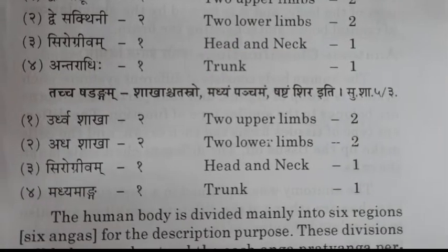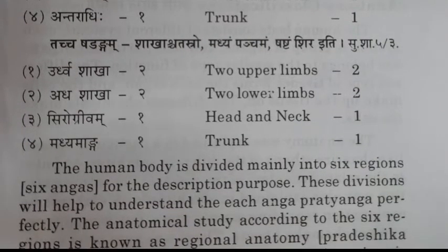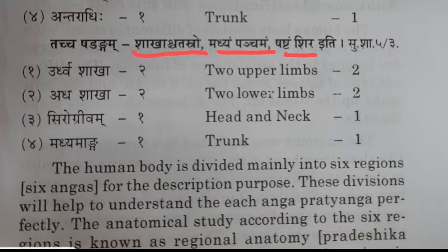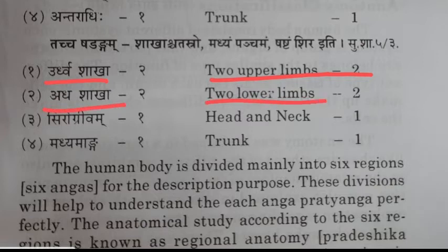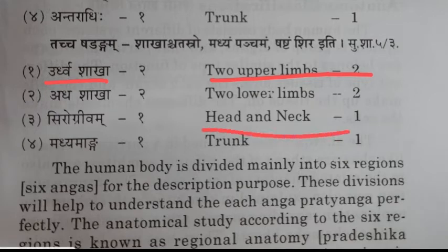The next shloka is: Shaka Chatastra Madhyam Panchamam Shastam Shira Iti. The meaning of this shloka is: Urdhra Shaka means two upper limbs, Adha Shaka means two lower limbs, Shirogrivam means head and neck, and Madhyamanga means trunk, which is one in number.